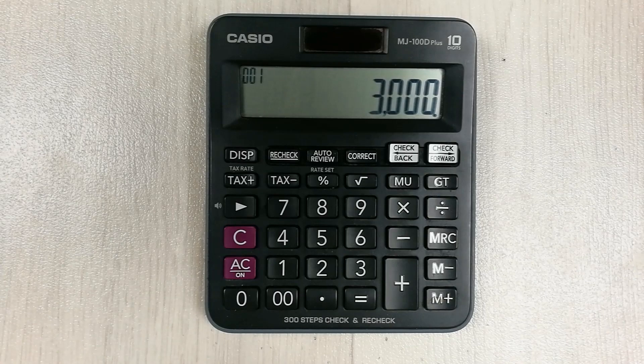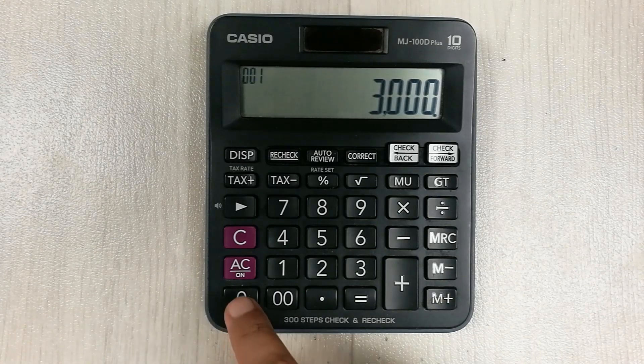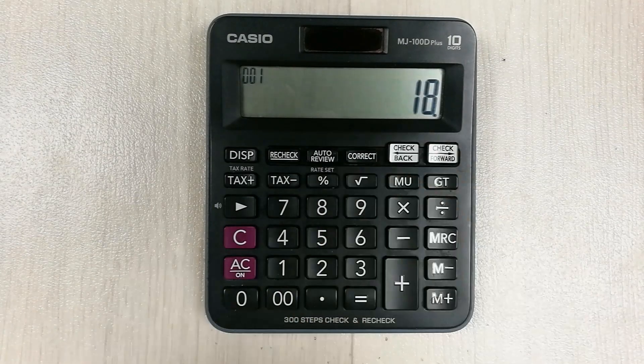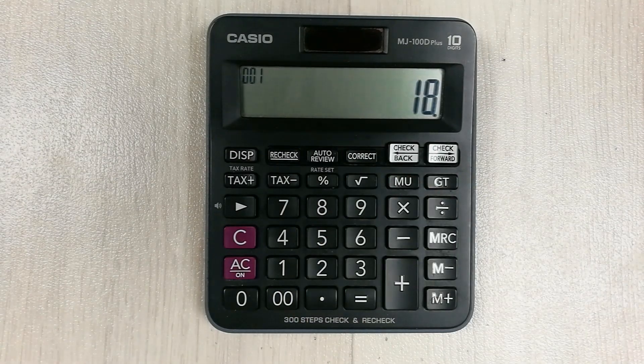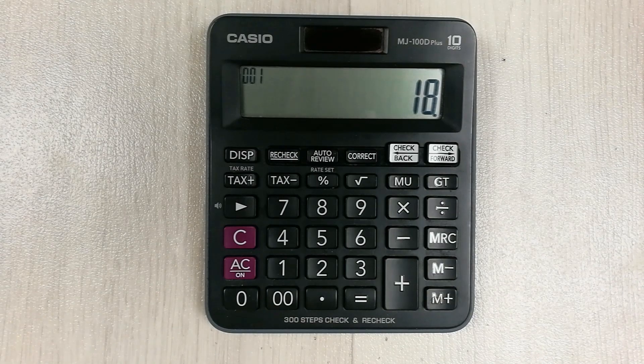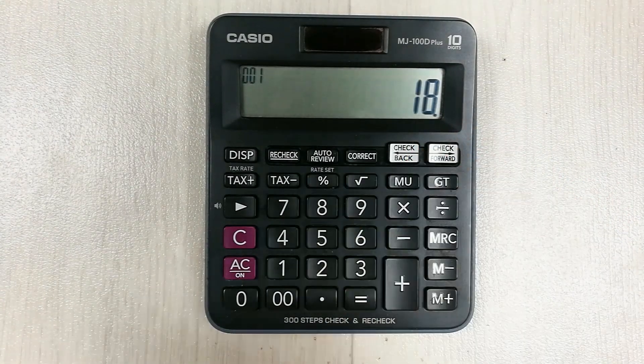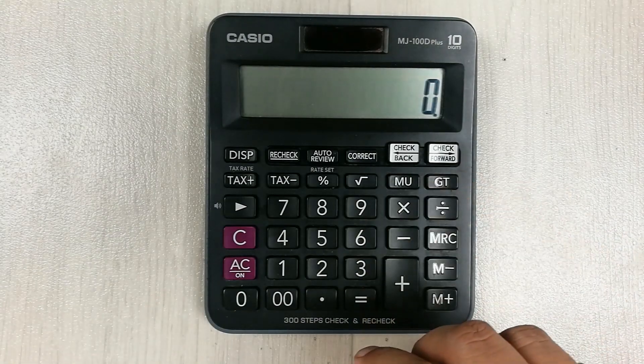And the GST which is already included in that price is 18 percent. So how can you find out the actual price before this 18 percent? We will do it in three steps.